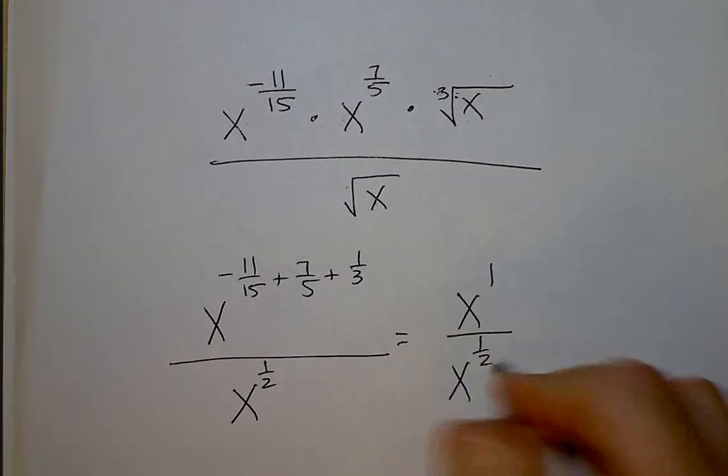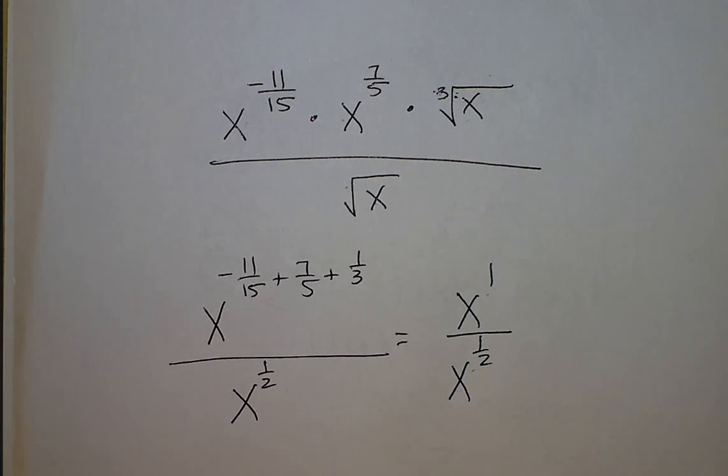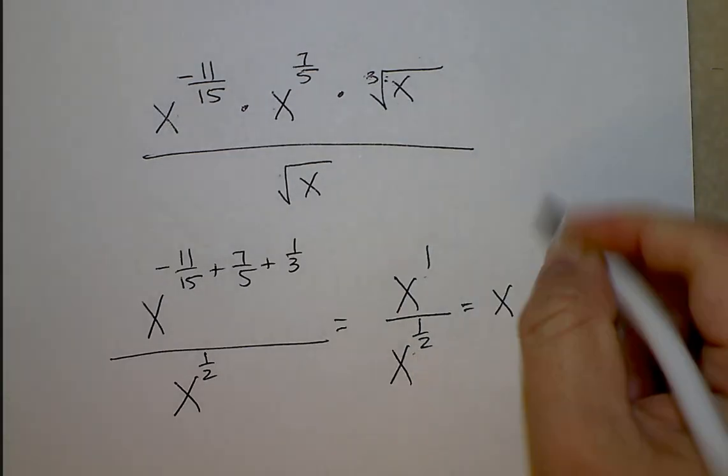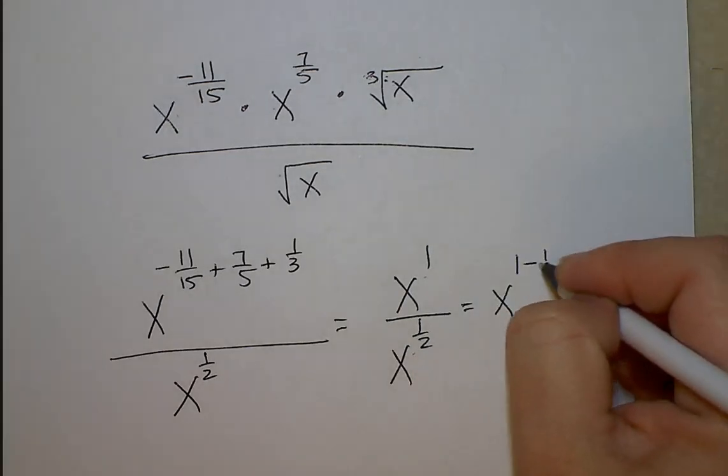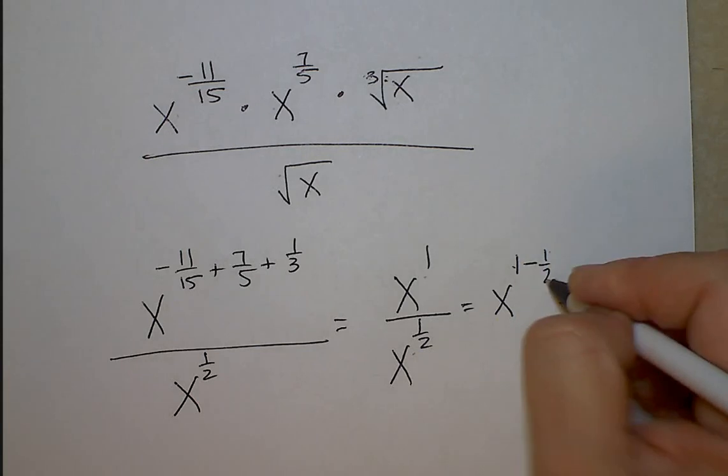When you have the exact same base and you're dividing, you're going to take the top exponent and subtract it from the bottom. One subtract one half is one half.